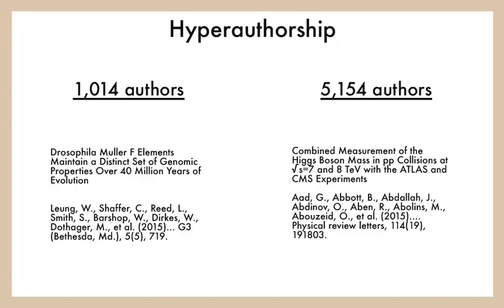Mega-science projects often require quadruple-digit author lists because large teams are needed to tackle the great volume of research data. One example is a genomics paper with many students who did the bench work listed as co-authors. There is also a physics paper notable for having the largest number of co-authors of any article published to date. When considering the effect of these projects on a professional career, will a faculty member up for promotion or tenure receive credit for being an author among hundreds or thousands of co-authors on a paper?